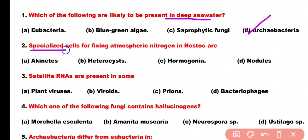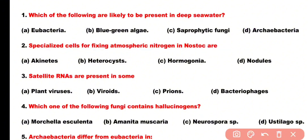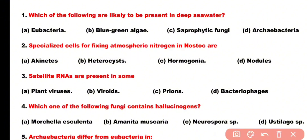Question number 2: Specialized cells for fixing atmospheric nitrogen in Nostoc are: akinetes, heterocysts, hormogonia, or nodules. Correct answer is option B. Heterocysts are specialized cells for fixing nitrogen and they are present in Nostoc, which is an important cyanobacteria.